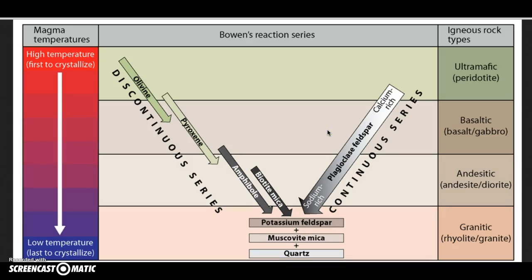Hello, in this screencast I'm going to briefly talk about Bowen's reaction series. Bowen's reaction series tells us about which minerals are crystallizing out of magmas at different temperatures, and that's very useful when we're trying to understand why certain types of igneous rocks have specific minerals within them.